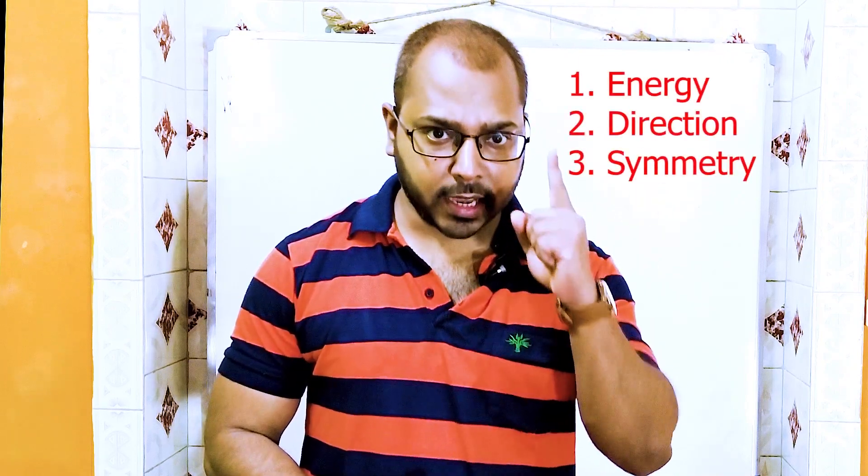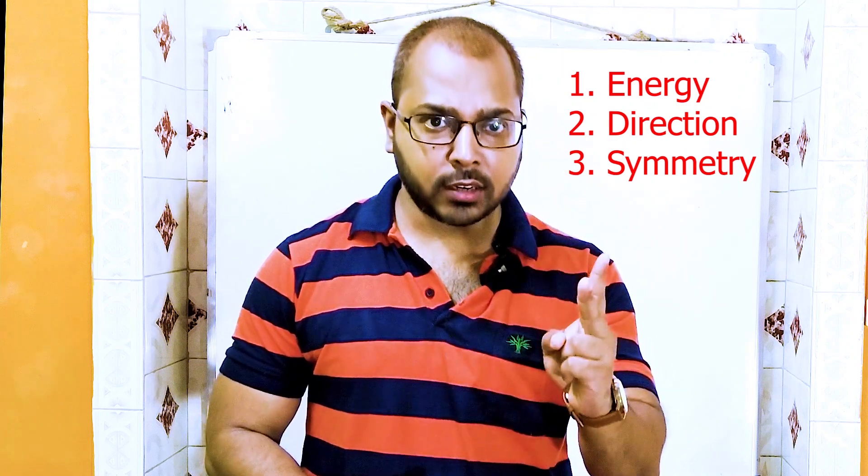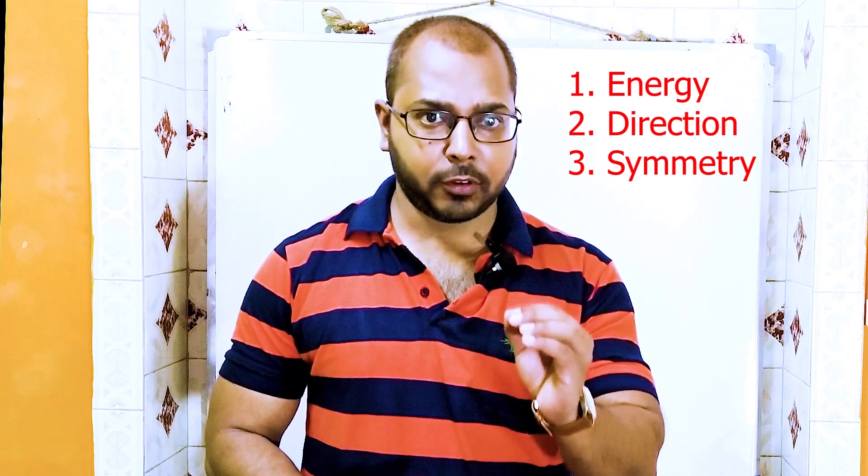For the formation of a covalent chemical bond, we need to fulfill three criteria. One is energy, another one is direction, and another one is symmetry. If two atomic orbitals have a large energy difference — suppose one orbital is here and another is far away — then bonding is not going to be formed.